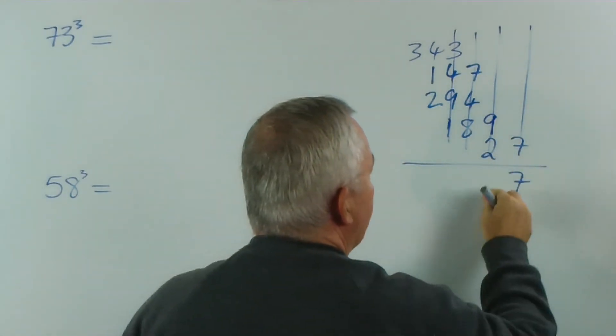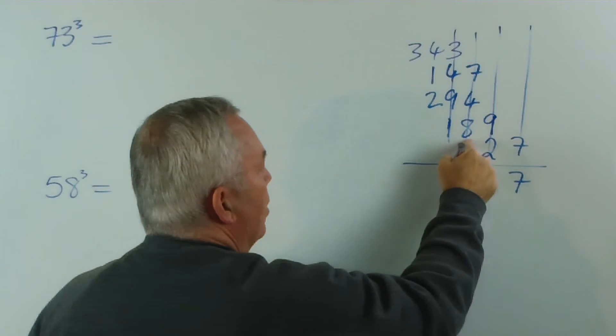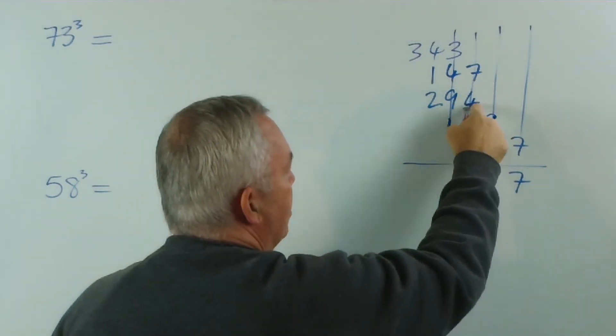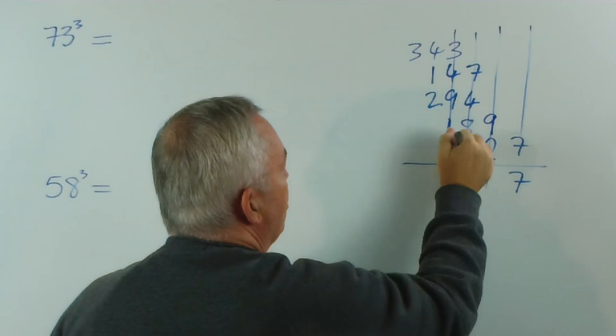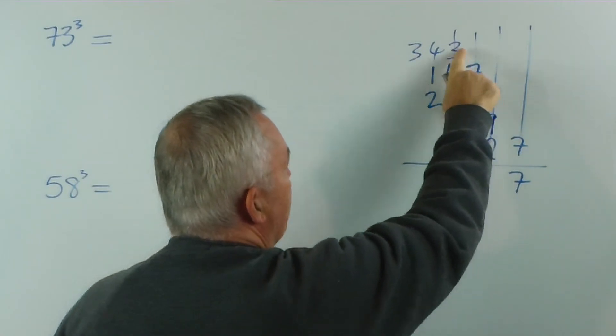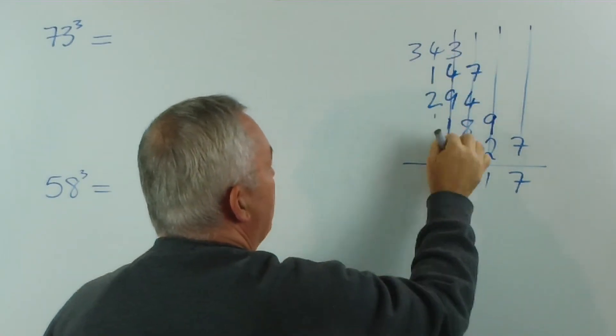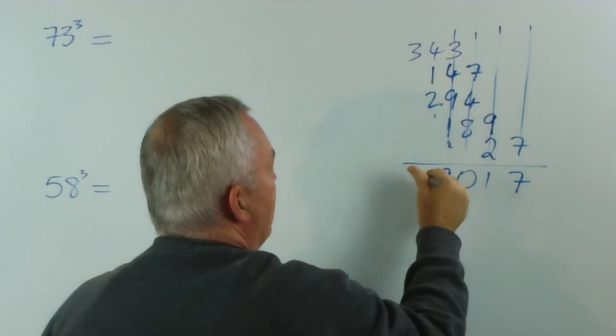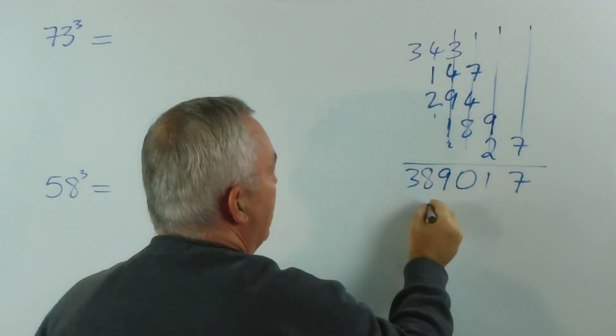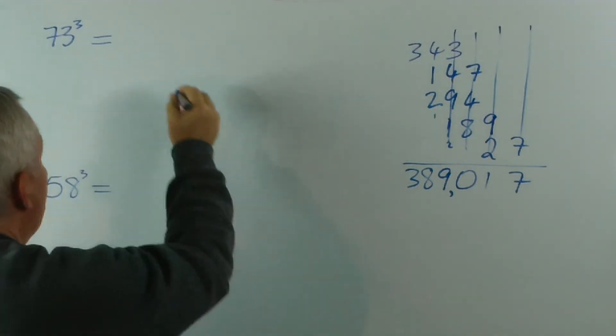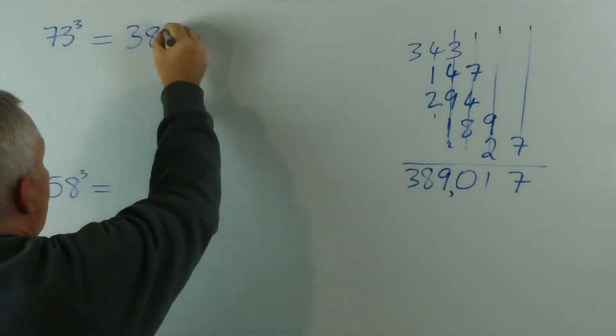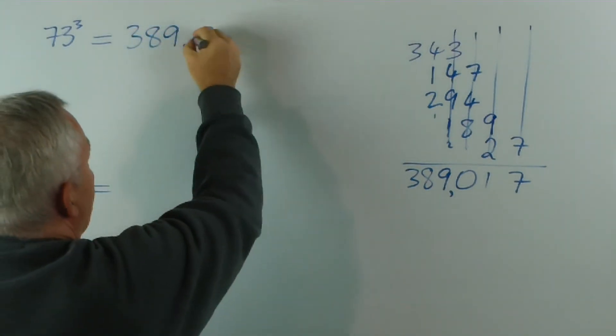We just add these up. Carry the one. We've got eight and eight. Sixteen and four is 20. Carry the two. We've got 10. Sixteen and 19. Carry the one. We've got five and three is eight. Well, that's a rather large number. Three hundred and eighty-nine thousand and seventeen.